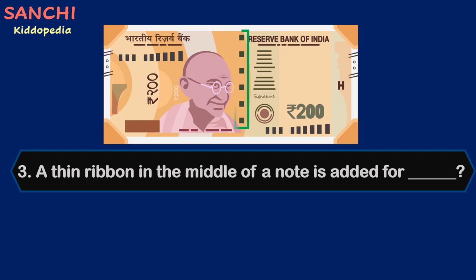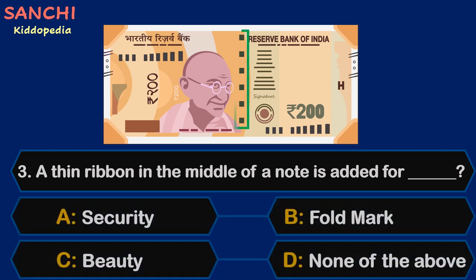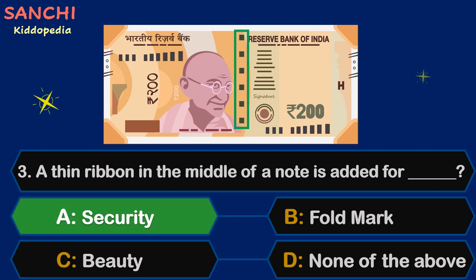Question 3. A thin ribbon in the middle of a note is added for — your options are: A. Security, B. Bold Mark, C. Beauty, or D. None of the above. Your time starts now. And the answer is A. Security.